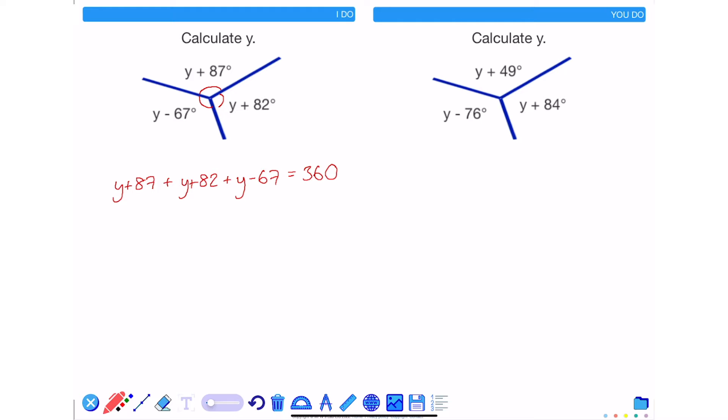Simplifying the left hand side gives 3y + 102 = 360 degrees. This has now become an equation that I can solve. Subtracting 102 from both sides gives 3y = 258. And then dividing both sides by 3, y = 86.